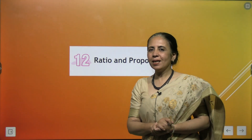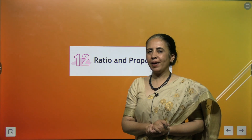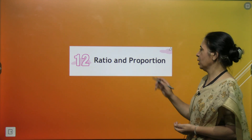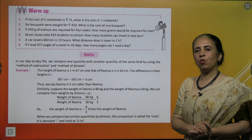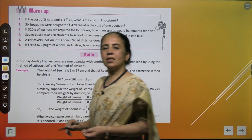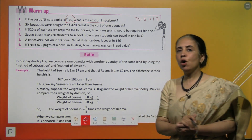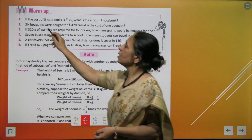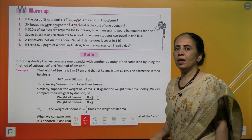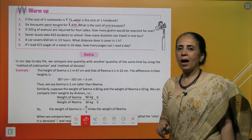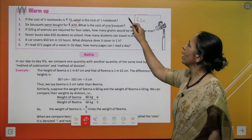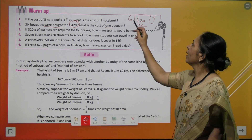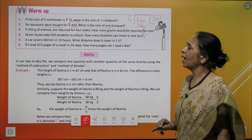Hello bright minds, Anjana is back with you with your grade 6 book, and we are going to start with a new chapter — chapter number 12: Ratio and Proportion. Before we start, we'll have a small warm-up with little questions. The first one: the cost of one notebook is rupees 50. Next, 6 bouquets were bought for rupees 420; you need to find the cost of one bouquet. You divide 420 by 6 and get 70.